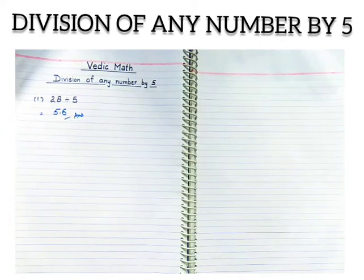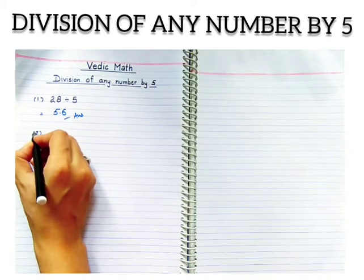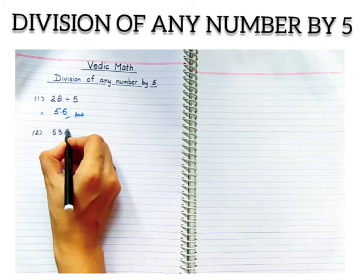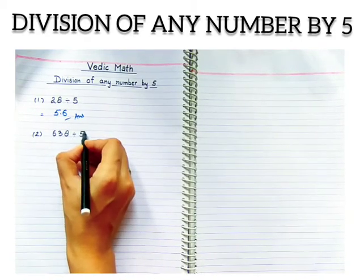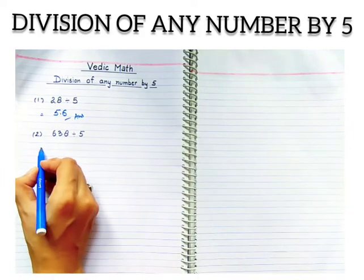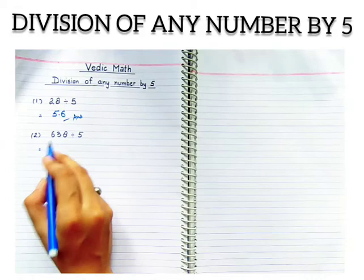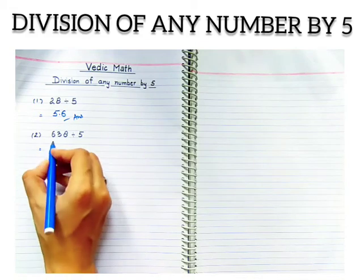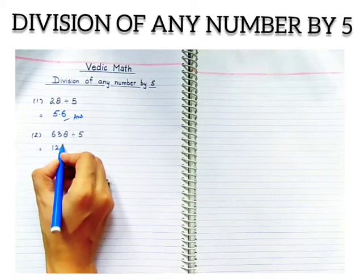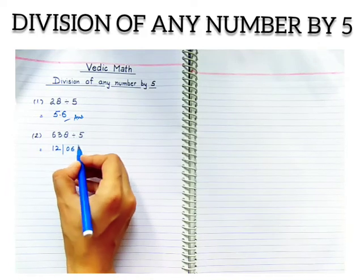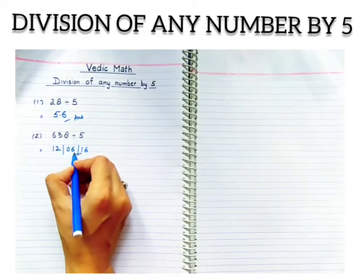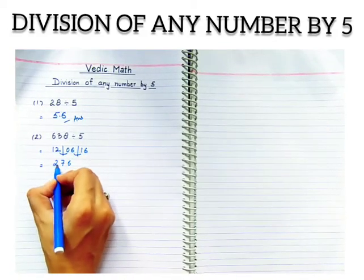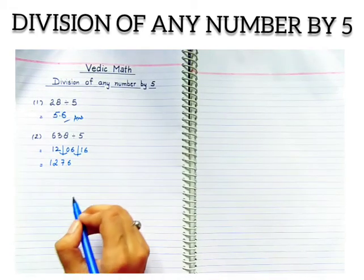Let's see a few more sums. Question number two: I'm taking three digits now - 638 divided by 5. Step one: we have to double this number, that is, the dividend. Now how to double this number? I'll apply the Vedic Maths multiplication method. Six times two is twelve, three times two is six, eight times two is sixteen. Now balancing: this is six, then seven, two, and one. Next step is we have to put the point before one digit. So here is the answer: 127.6.